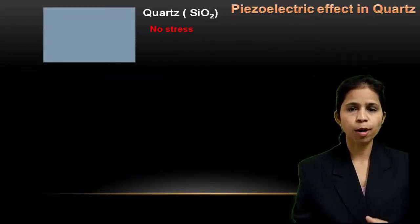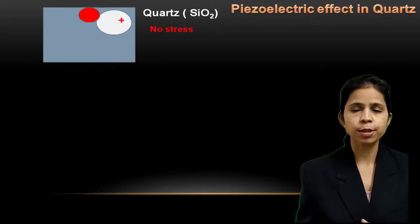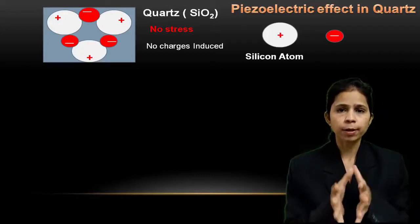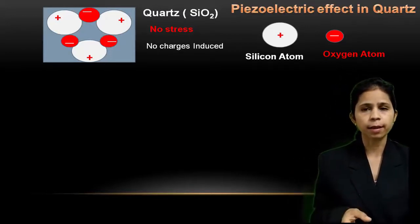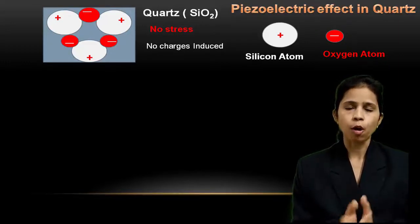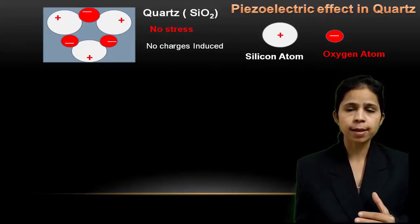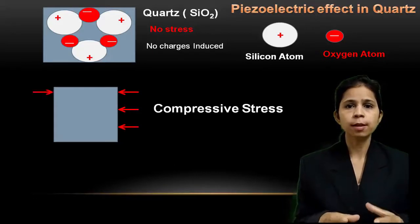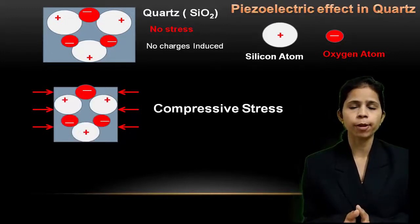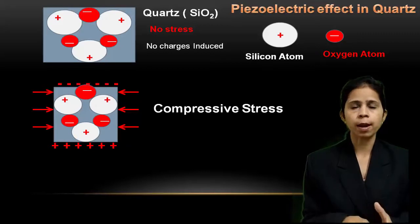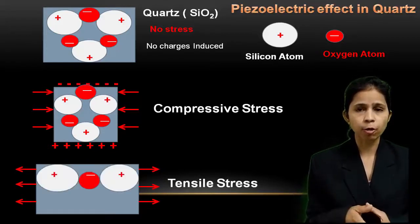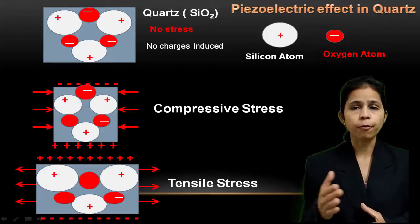Take the example of quartz crystal. Quartz is silica — SiO₂, silicon dioxide — consisting of silicon atoms, which are positively charged, and oxygen atoms, which are negatively charged. When the crystal is unstressed, the electric dipole moments are oriented randomly and cancel out each other, so there are no net charges on the faces. But when you squeeze the crystal, or apply compressive stress, a potential difference is developed — with positive charge on one face and negative charge on another. On the other hand, if you apply tension or stretch the crystal, the potential difference is again developed but with opposite polarity.